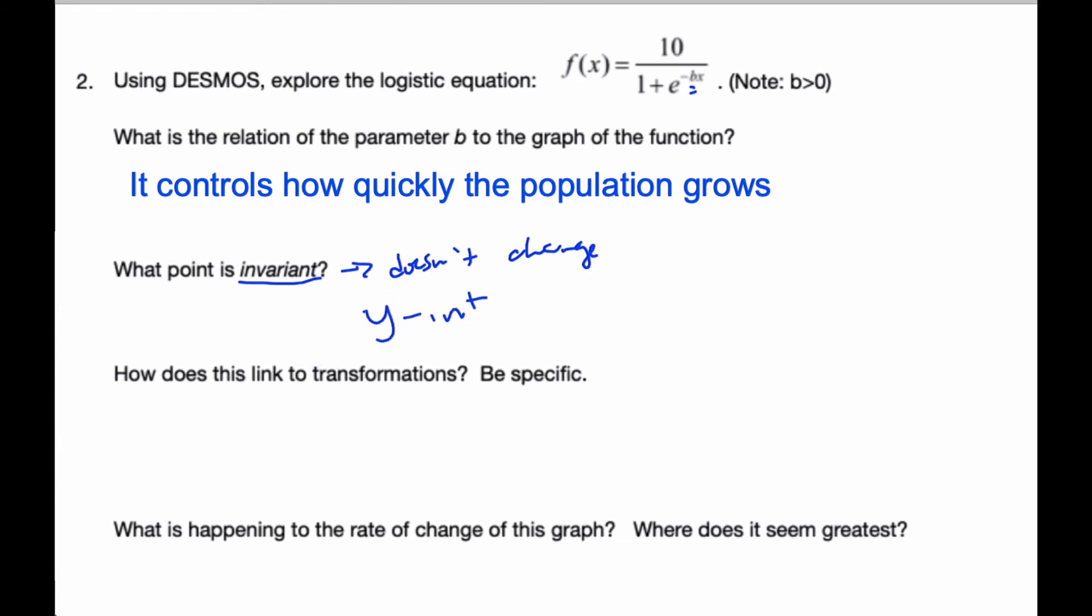Well, how does this one link to transformations? Well, this one is a horizontal stretch by a factor 1 over B. Here, when I take 1 plus e to the negative Bx over 10, if I'm going to do a horizontal stretch, I multiply by B, the x gets multiplied by B, and so it's a horizontal stretch of 1 over B.